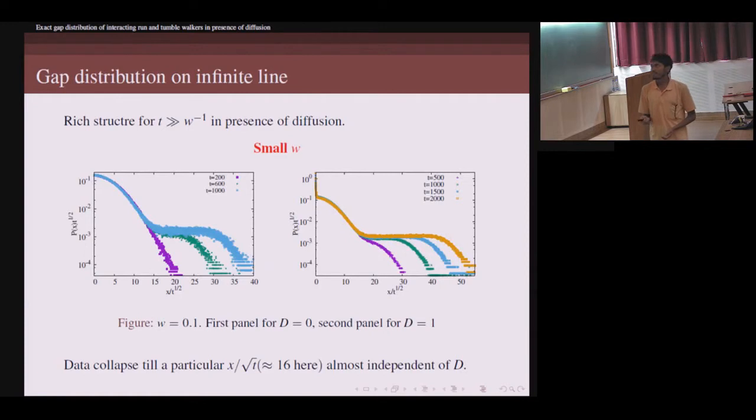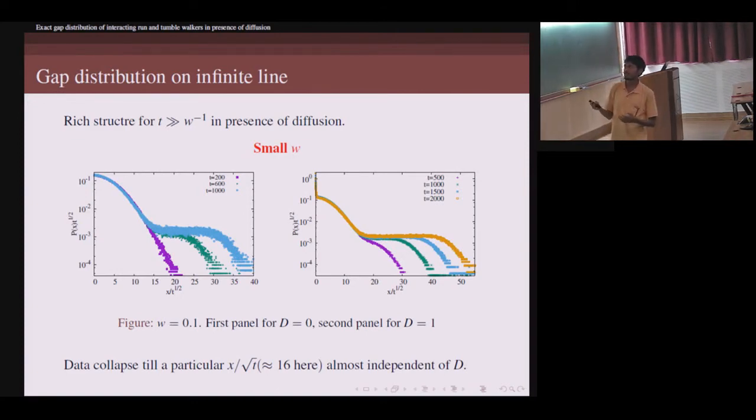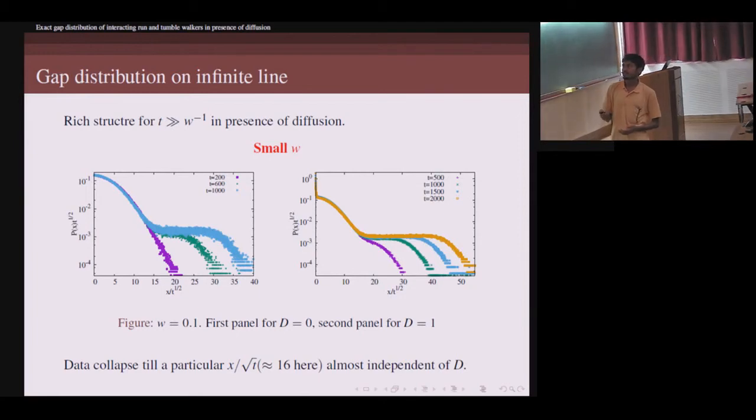We have some results, at present mostly numerical results, on infinite continuous line. A very rich structure is obtained in the long time limit. For example, the results can be segregated in two parts: when the tumble rate is very small and when the tumble rate is very high. For the small tumble rate case, there are these kind of structures.